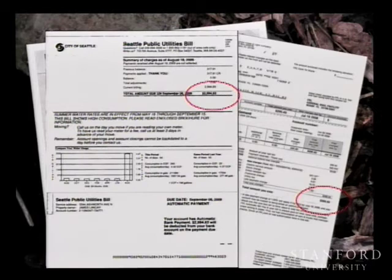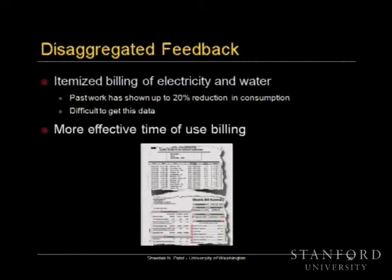That's what we're working on — itemized billing and disaggregated feedback. A lot of work in environmental psychology has shown up to 15 to 20% sustained reduction in consumption if you can reduce that disconnect by giving people better information about what devices they're using and how much power they're consuming. The technology we built, originally motivated for activity recognition, gives you that information — which fixtures and appliances are operating and how much resources they're consuming.